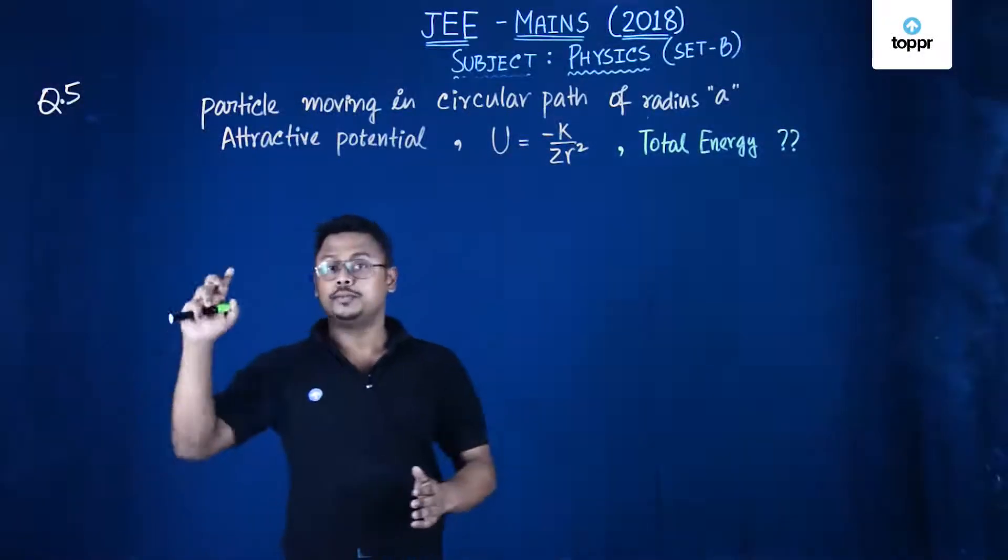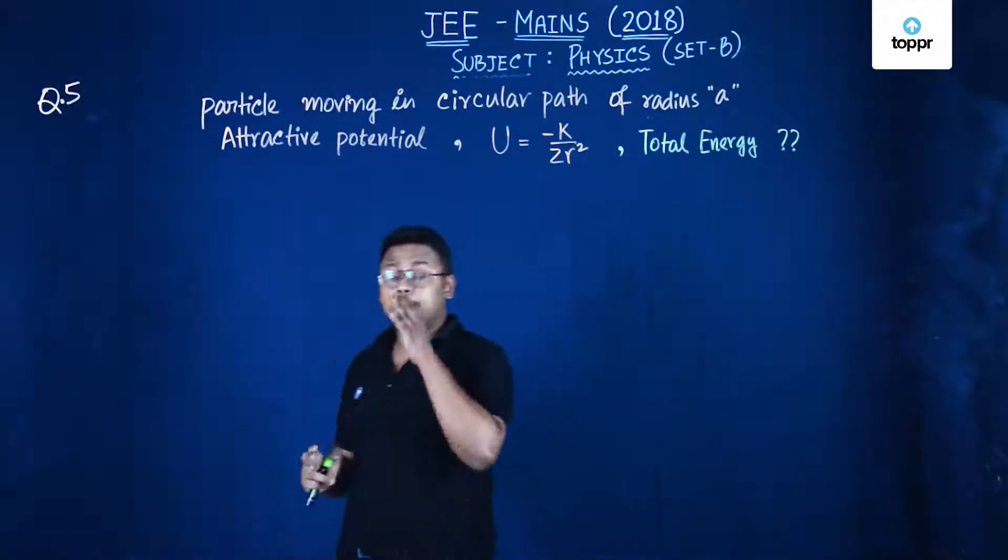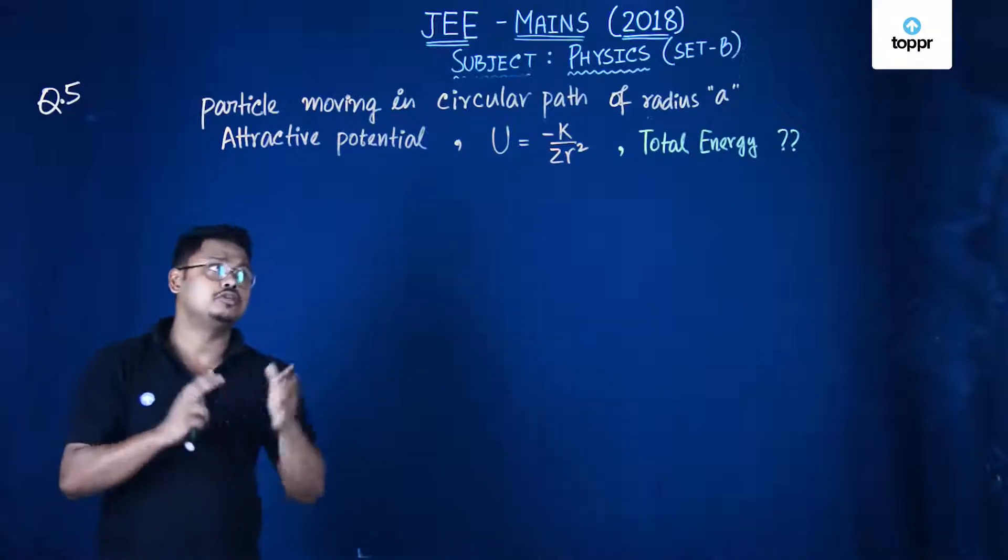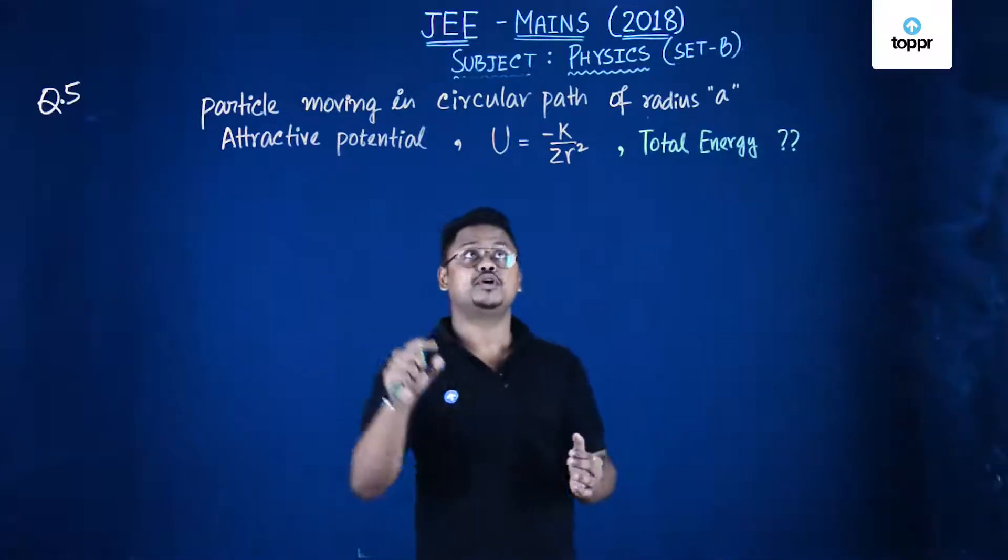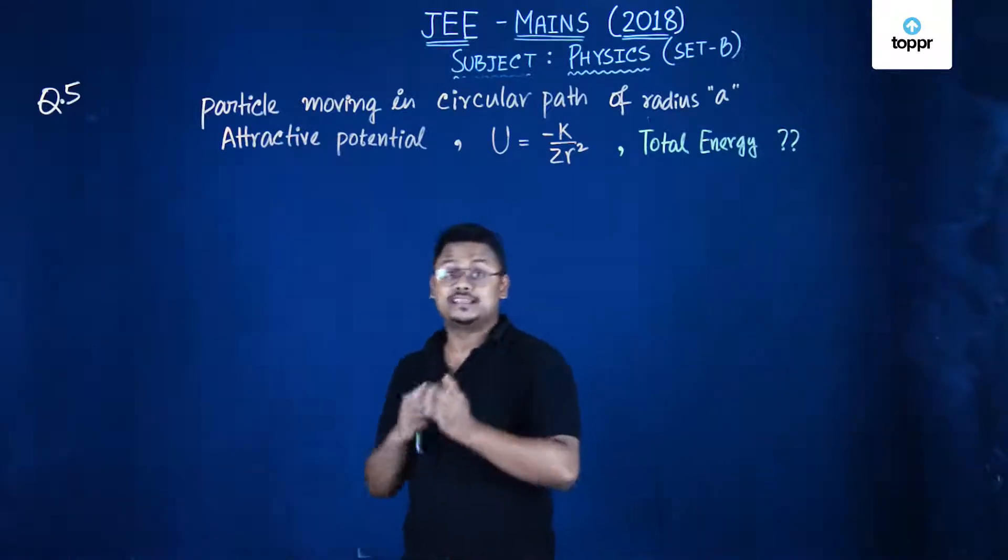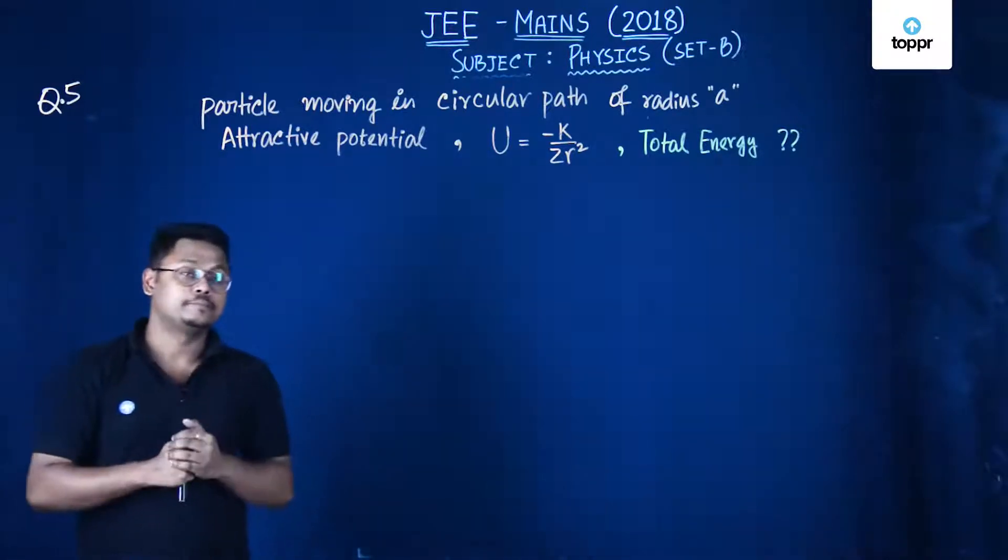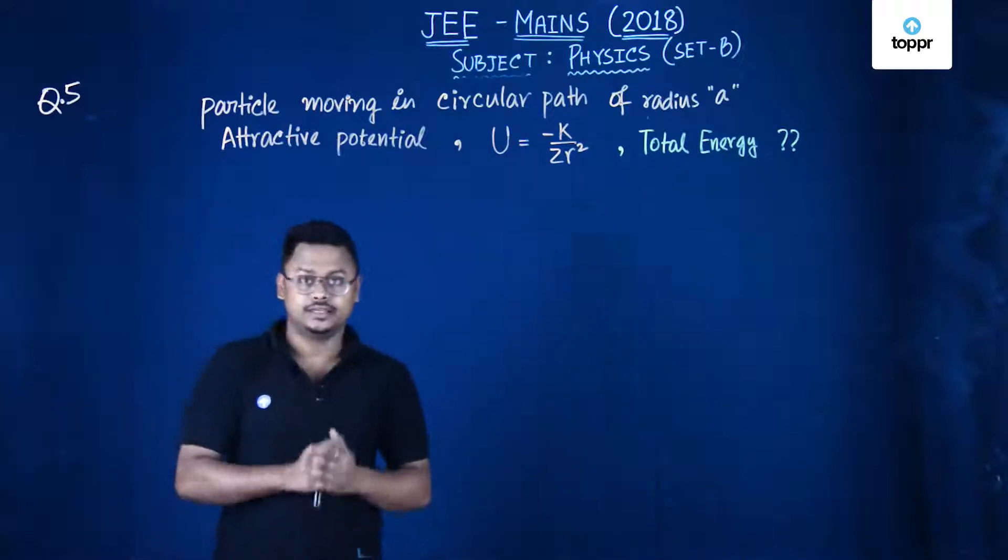Now we are going to do problem number 5. It says a particle moving in circular path of radius a is being experienced by an attractive potential U equals minus k upon 2r square. We have to find the total energy.